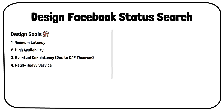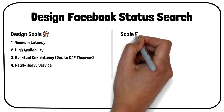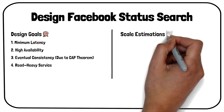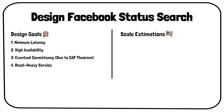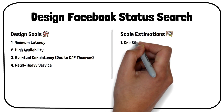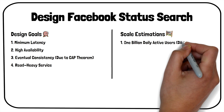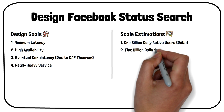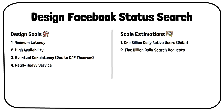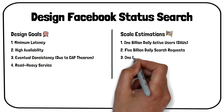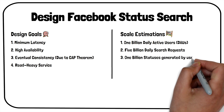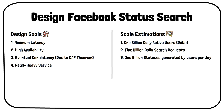For an efficient system, we will have to consider the following scale estimations. On average, the system will have 1 billion daily active users and will receive around 5 billion search requests daily. Also, about 1 billion statuses will be generated by the users per day.